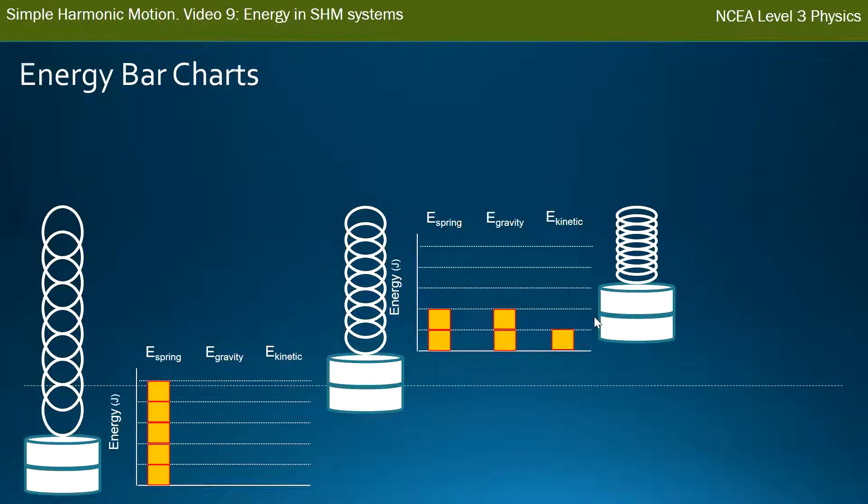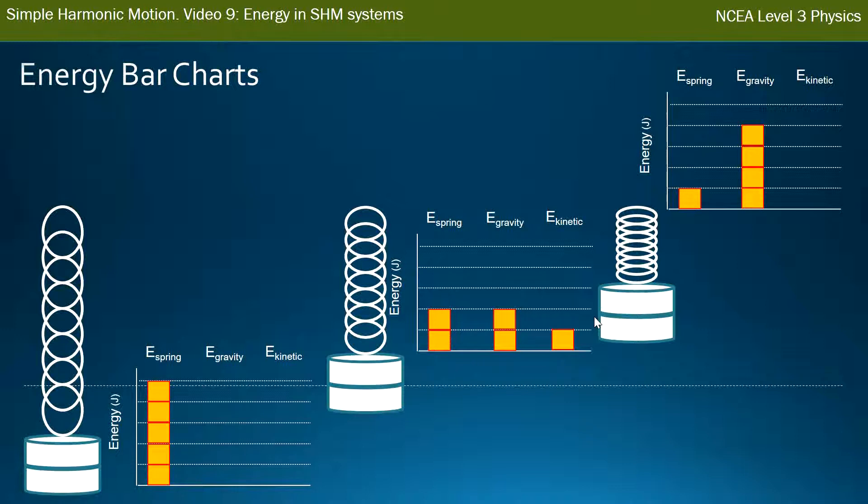As it moves to its top point, it gets to its top point and it stops moving, its kinetic goes down to zero again. Its spring energy is not under as much tension, so there's not as much energy stored in the spring, so that gets less again. But the mass is higher up again, so it has more gravitational energy. So once again, the important thing to take out of this is that there's still only five bars of energy. So everything's balanced.